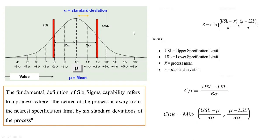I have plotted a normal probability plot here on my screen, where the lower specification limit is 8 and the upper specification limit is 12, with the average value at the center, which is 10. Suppose these are the number of minutes you are taking to complete a transaction or process an invoice. You should not take less than 8 minutes or more than 12 minutes. Based on the variation in the process, we want to calculate the sigma level.